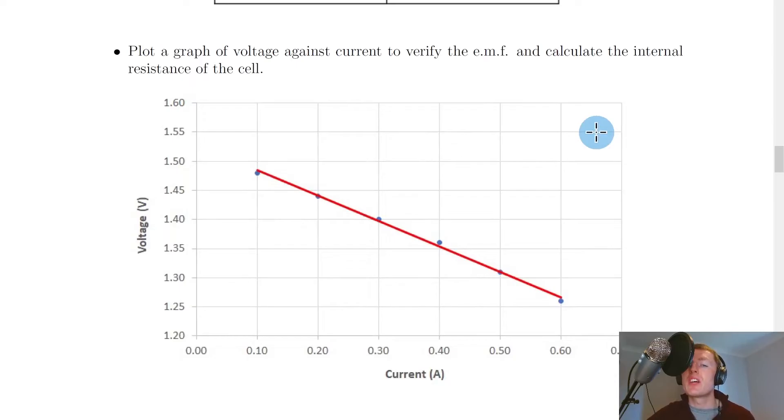What you then see if you plot this on a graph is something like this. So you can then plot a graph of voltage against current to verify the emf and calculate the internal resistance of the cell. So we can use this graph to actually find the emf and the internal resistance and we're going to look at how to do that.